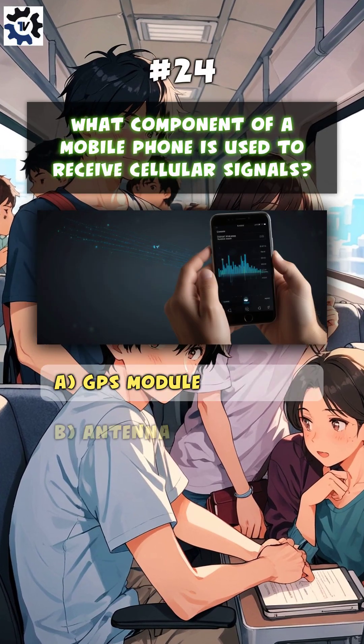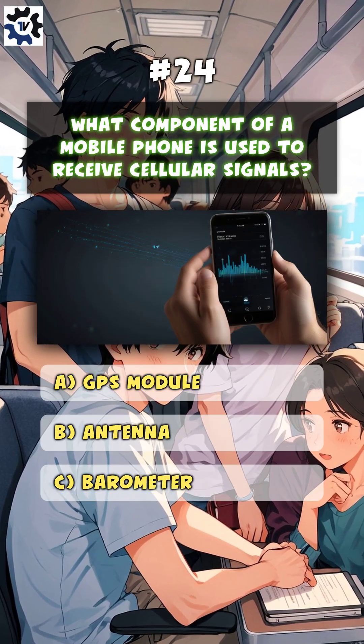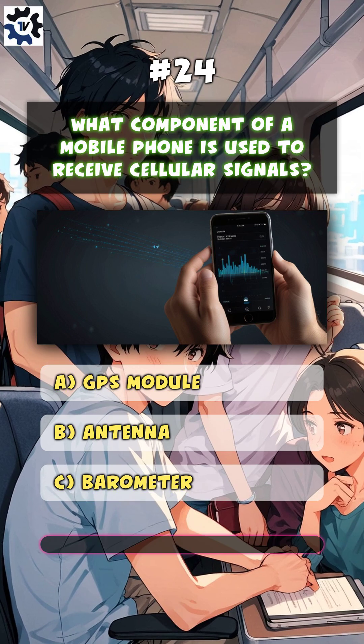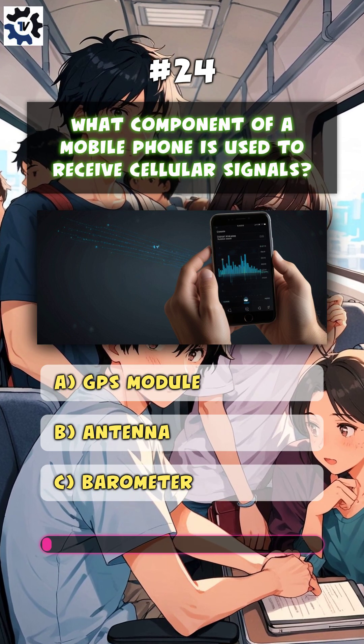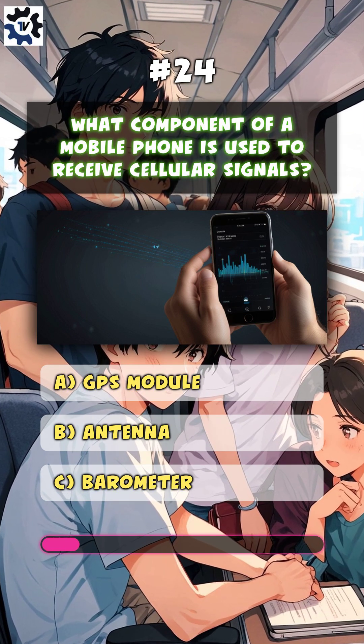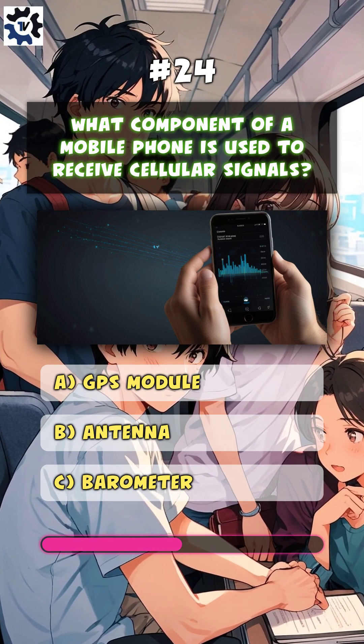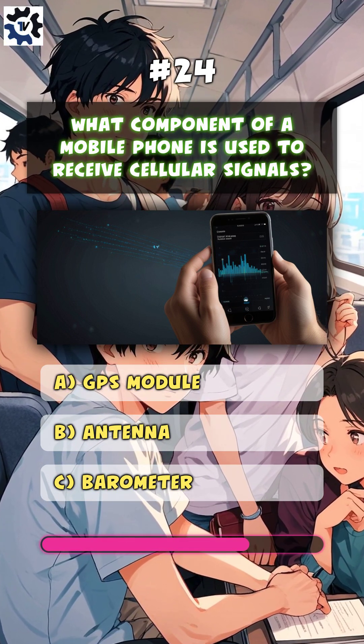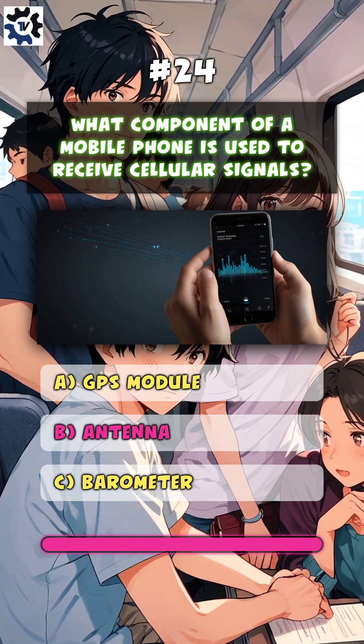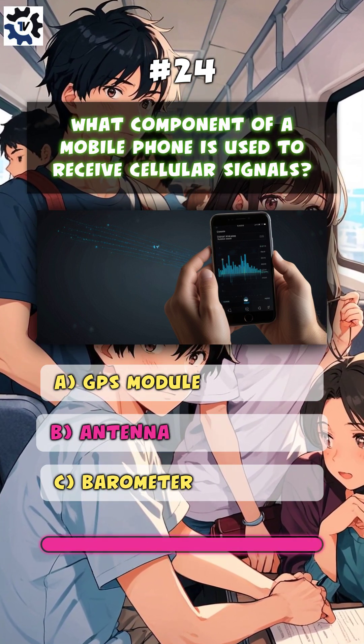What component of a mobile phone is used to receive cellular signals? B. Antenna.